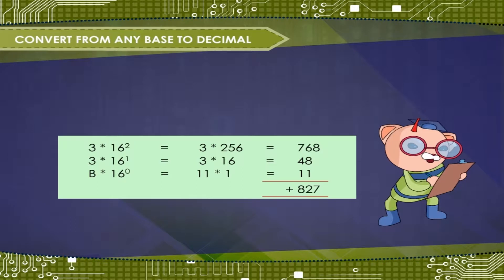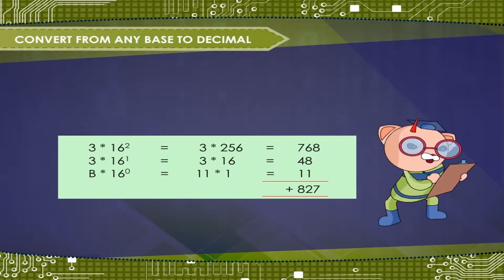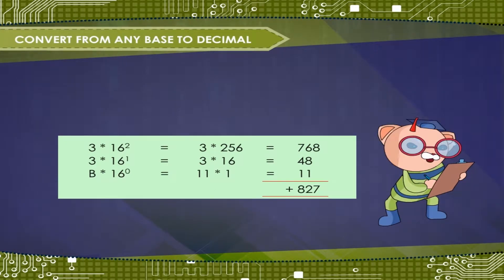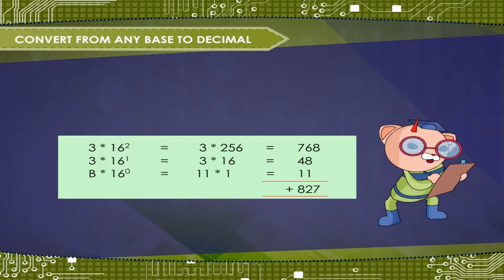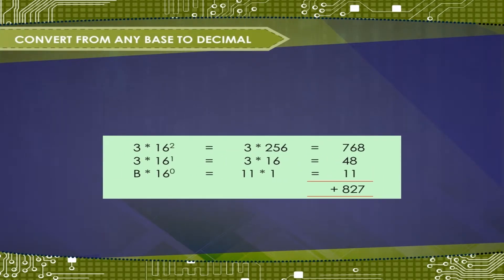As you did before, you can find the decimal value of 33B base 16 by computing the value of each digit and adding them. Substitute B with 11 base 10 in this conversion. You will see that the decimal number 827 base 10 is 33B base 16 in hexadecimal.